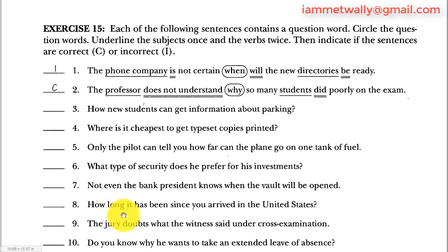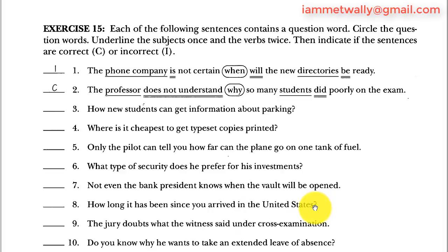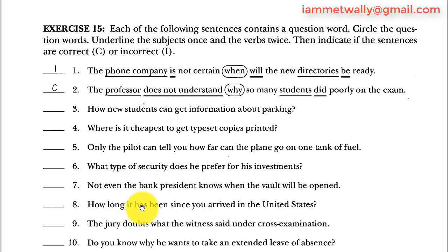Sentence 8: 'How long it has been since you arrived in the United States?' There is a question mark, so I should have question word order. 'How long' is the question word; 'it has' means the auxiliary is not fronted, so it should be 'how long has it been,' not 'it has been.' This sentence is incorrect.